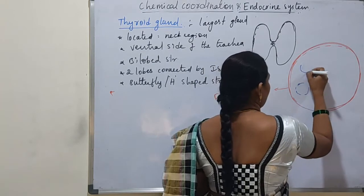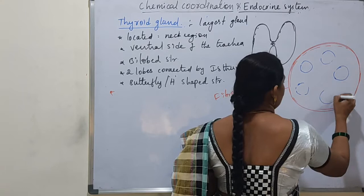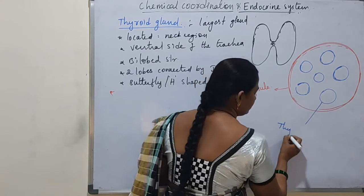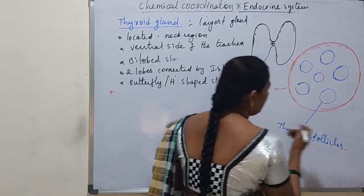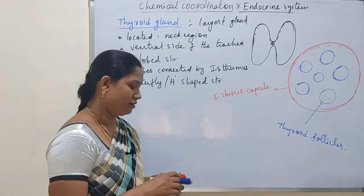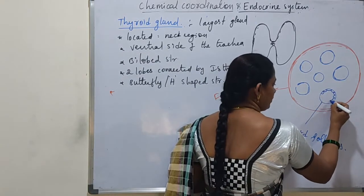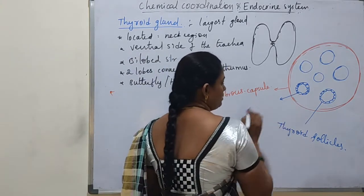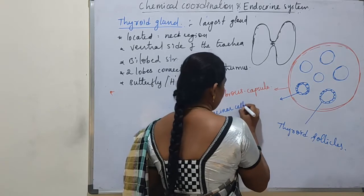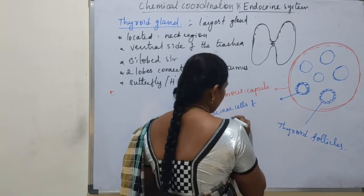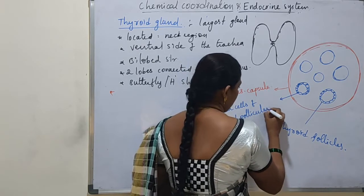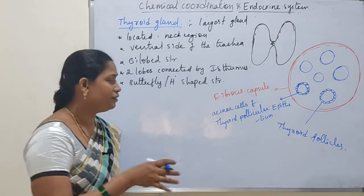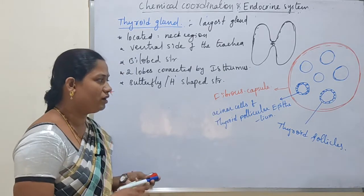Inside, many rounded globular structures are present, which are called thyroid follicles. Many follicles are present inside the thyroid gland. Each follicle is lined by a single layer of epithelium called the acinar cells of the thyroid follicular epithelium.